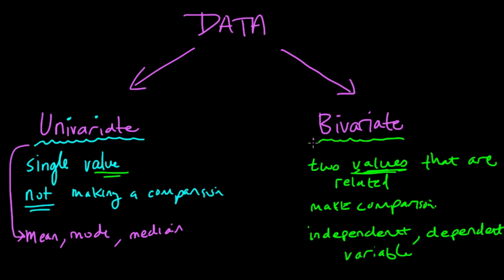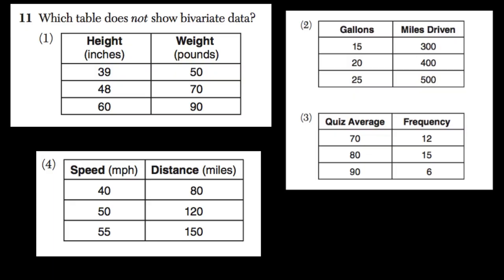Bivariate data looks at variables that are related and that affect each other. So actually, this question gives us some good samples here to look at. So let me clear this off.